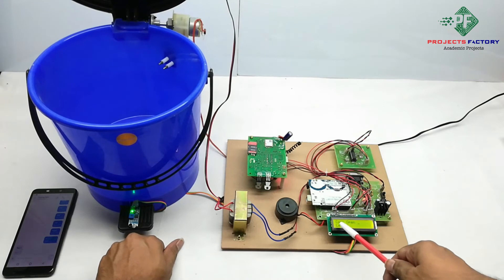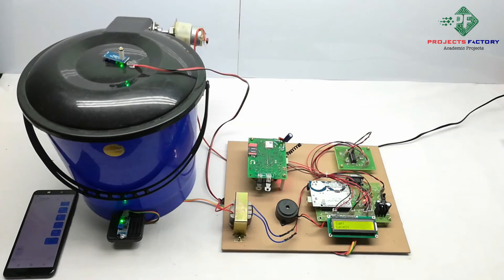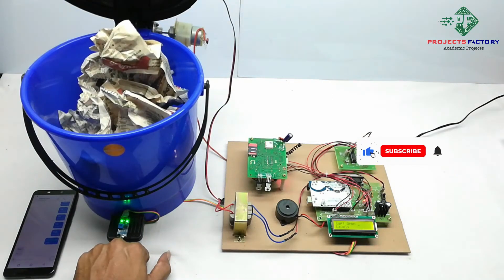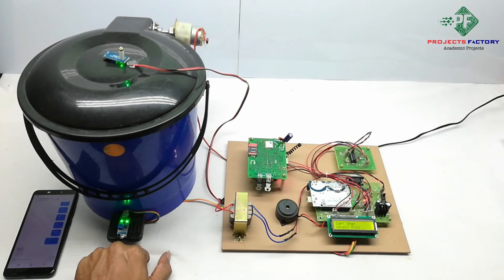We can see here, cap open. We can see here, level full. If dustbin filled then SMS will send to registered mobile number.